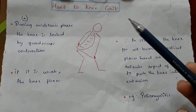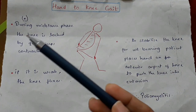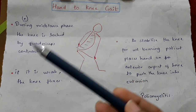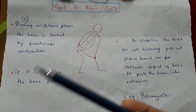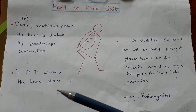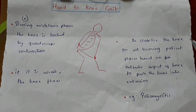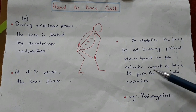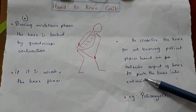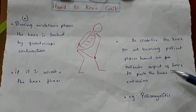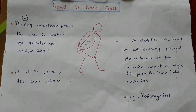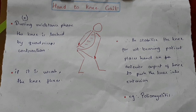In hand to knee gait, normally during mid-stance phase the knee is locked by quadriceps contraction. If the quadriceps is weak, the knee flexes. Therefore, to stabilize the knee for weight bearing, the patient places the hand on the anterior aspect of the knee joint to push the knee into extension. This is seen, for example, in poliomyelitis patients.